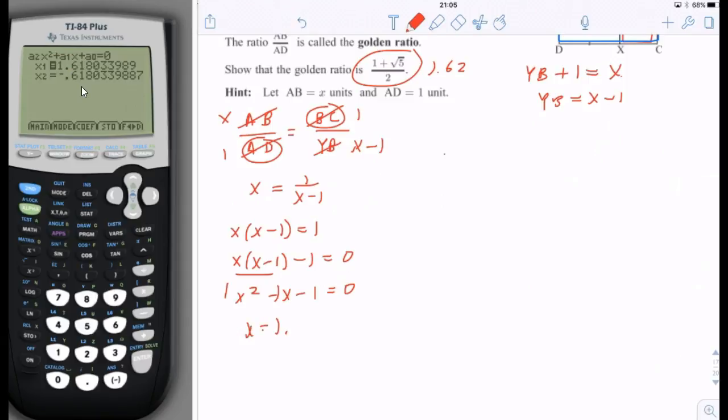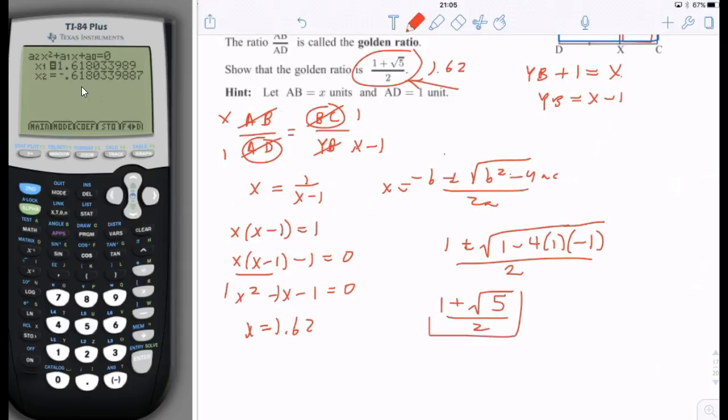Probably it would have been nice to do this with the quadratic formula to show that it looks exactly like that. So let's do that. Negative B plus or minus square root of B squared minus 4AC all over 2A. That's our X value. The negative B is going to be negative negative 1, so it's going to be 1, plus or minus. The B squared is going to be 1, minus 4 times A times C, negative 1, divided by 2 times A, which is 1. So we got 1 plus, and then the inside of the square root simplifies to 5, divided by 2. So you can see that we did, indeed, get the golden ratio.